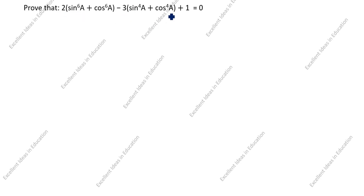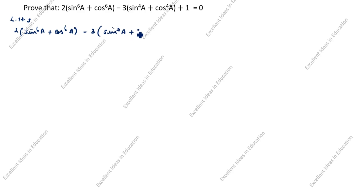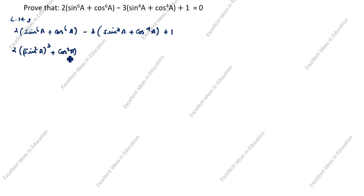We need to prove LHS is equal to RHS. First we will take LHS. What is given as LHS? 2(sin⁶a + cos⁶a) − 3(sin⁴a + cos⁴a) + 1. Now we will rewrite this as 2(sin²a)³ + (cos²a)³ minus 3(sin²a)² + (cos²a)² plus 1, since multiplying 2 threes gives 6 and 2 twos gives 4.